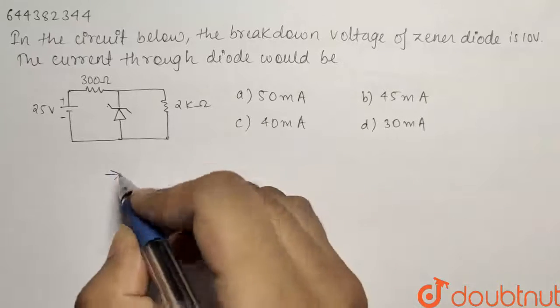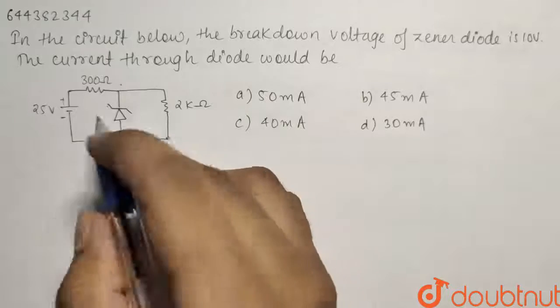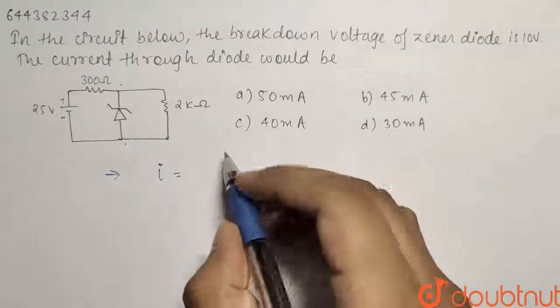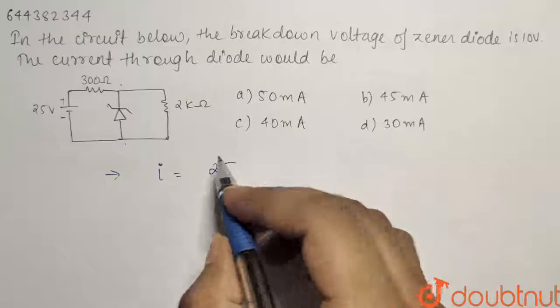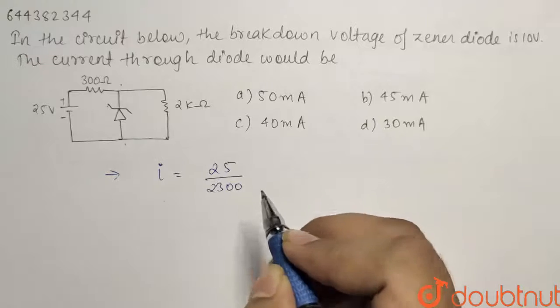So let us consider first, let us find out the potential across the Zener diode. If we don't consider Zener diode to be there, then the current I in the circuit would be equals to 25 divided by the net resistance, that is equals to 2300 ohms.